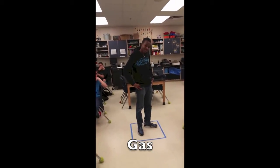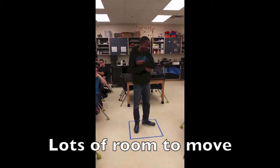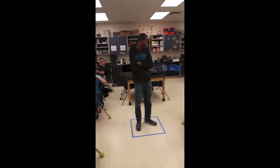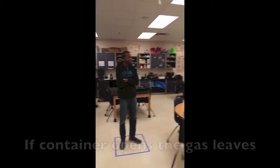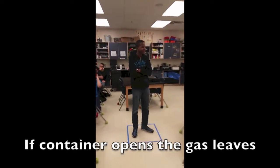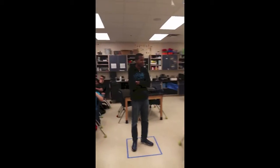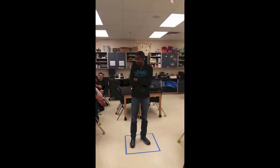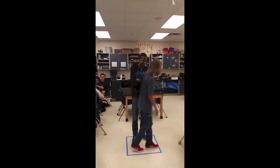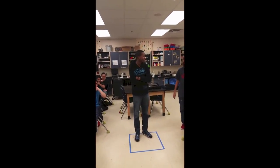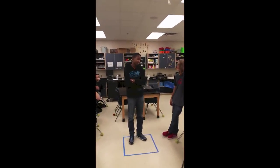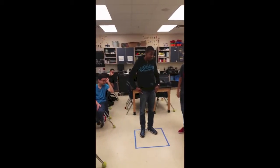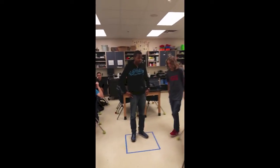Emelian is a lone gas particle inside of a container. Gas particles have lots of room to move around. They have no definite volume and no definite shape. They can bounce around wherever they want, and if I were to open up the box, Emelian could go anywhere in the room. Jason, I want you to pass through the container where Emelian is located. Did they really interact with each other? Not that much.